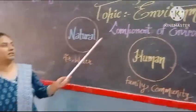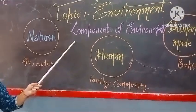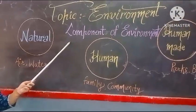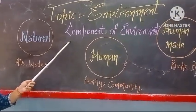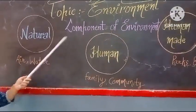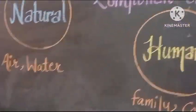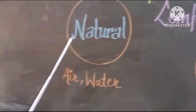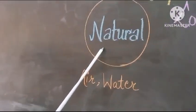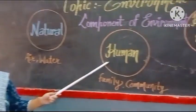Next, the components of the environment. What are the components of the environment? We have three components of the environment. First, the natural environment. Second, the human environment.